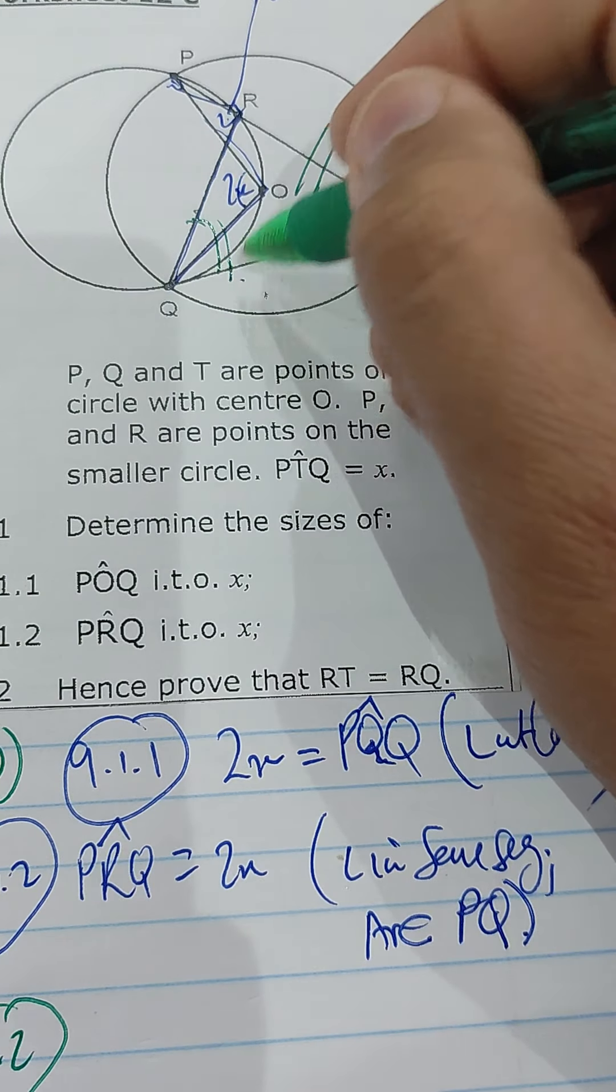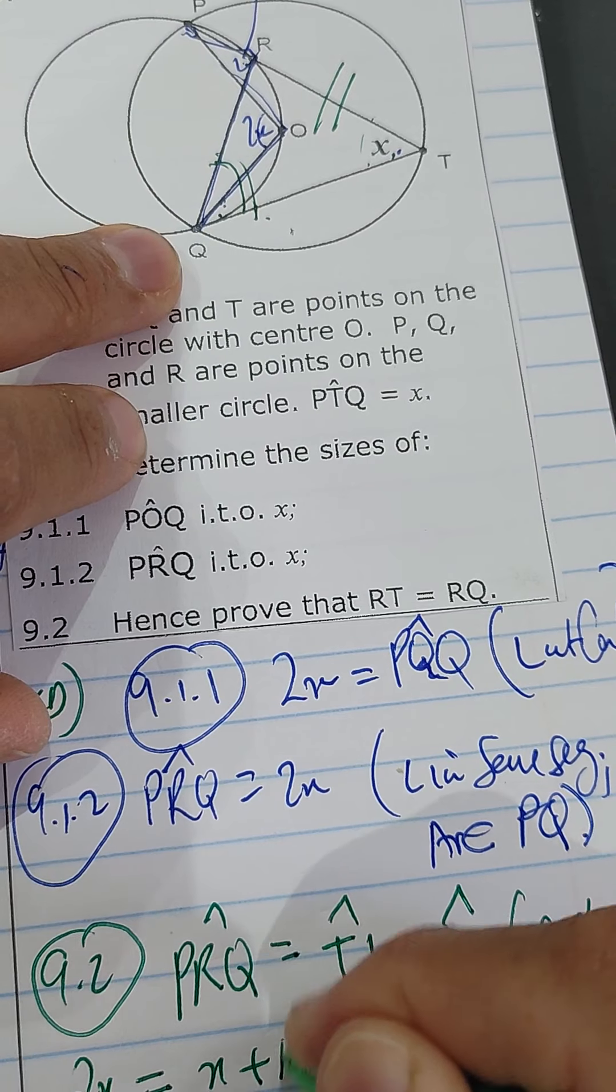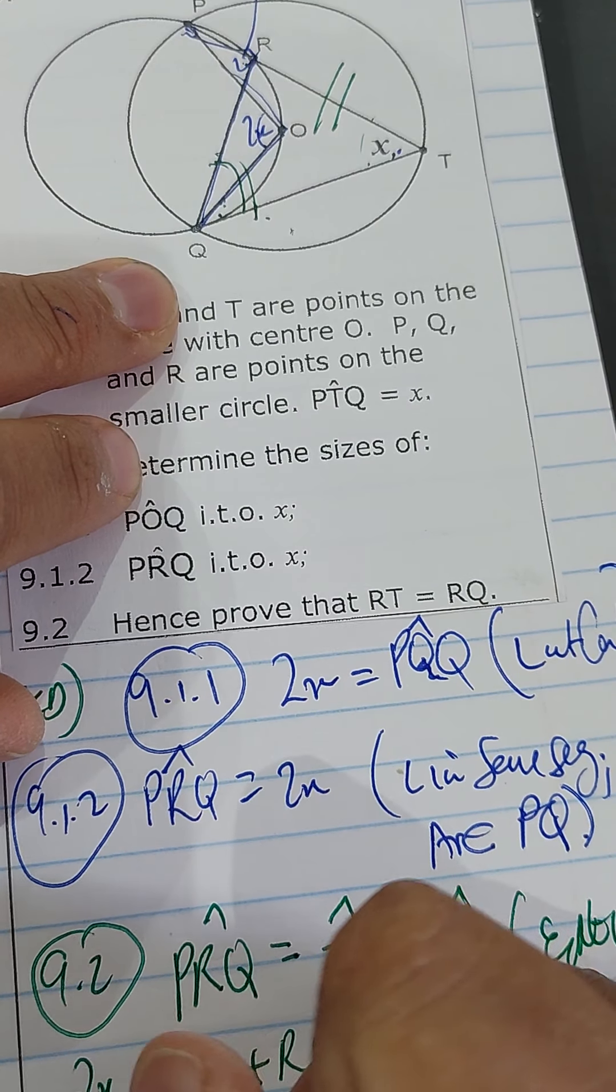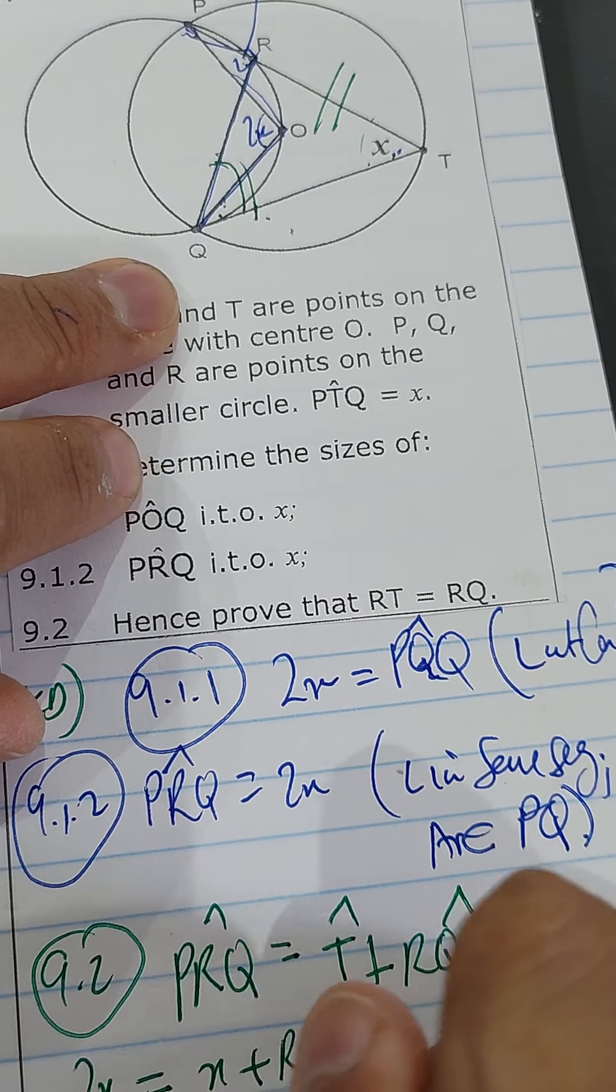So I have to conclude. So I say, since RQT is equal to angle T, which is equal to x, they have proven it now, right? Since that is the case, we can conclude. Therefore, since that is the case, therefore RQ is equal to RT. Why?